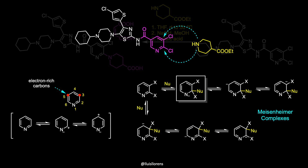The ability of the heteroatom to accommodate negative charge in the intermediates produced — Meisenheimer complexes — by inductive and mesomeric effects, favors the SNAr at the 2, 4, and 6 positions over C3 and C5. And that's it.